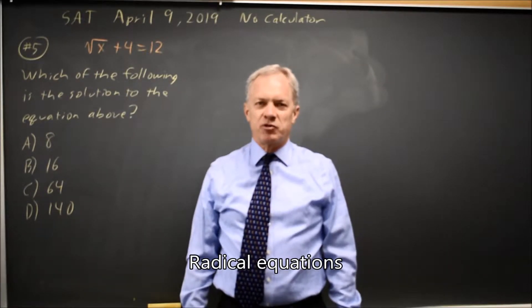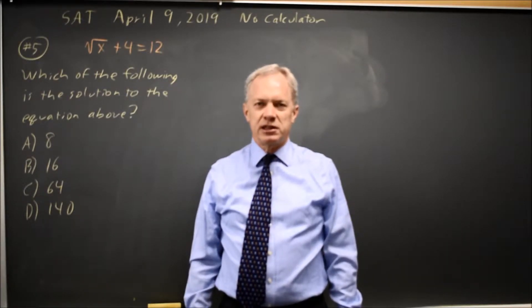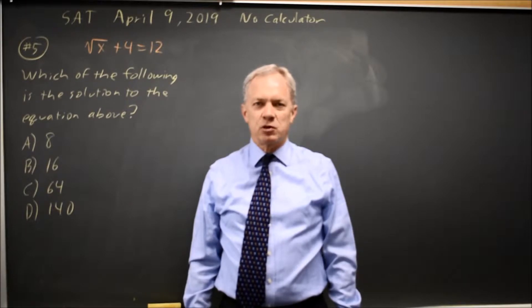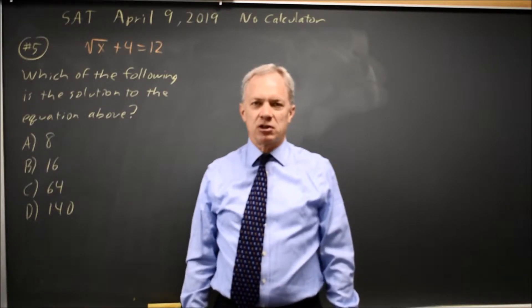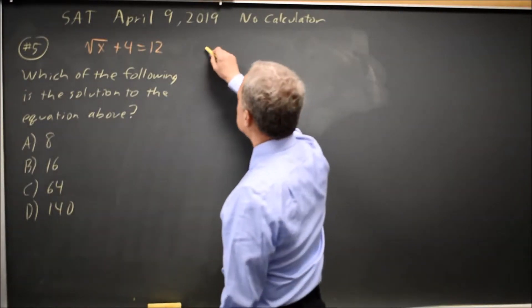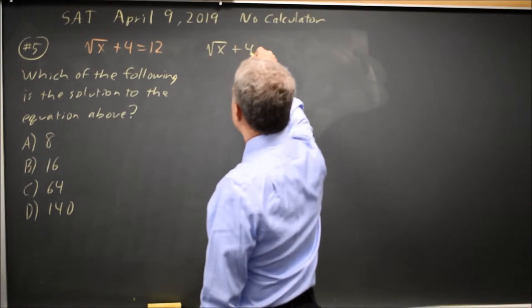This is non-calculator question number 5 from the April 2019 SAT. College Board gives us an equation with a square root and asks us to solve for x. So let's do that. Square root of x plus 4 equals 12.